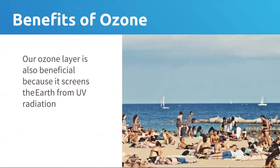We rely on ozone not just when thinking about our own health — too much UV exposure is dangerous — but even other ecosystems. For instance, the productivity, or how much photosynthesis happens in the ocean, is really sensitive to UV. Ozone is critical for protecting all living things on the planet from the harmful effects of the sun.